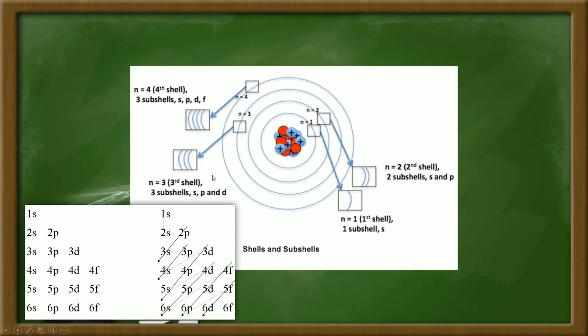The third shell contains S, P, and D, and this is why initially they were wrong in saying that it can hold up to eight electrons, because now we know that an S and a P orbital can hold up to eight in total, and if you add the D orbital, which can hold up to ten, the total is eighteen electrons. The third shell can hold up to eighteen electrons, not eight.